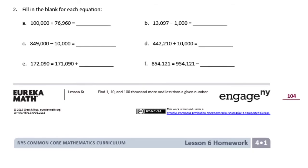Number 2: fill in the blank for each equation. A: 100,000 plus 76,960 — we're just going to add 100,000 to this, so that would make it 176,960. B: 13,097 minus 1,000 — we're just going to take away 1,000, which would make that a 2, so we have 12,097.